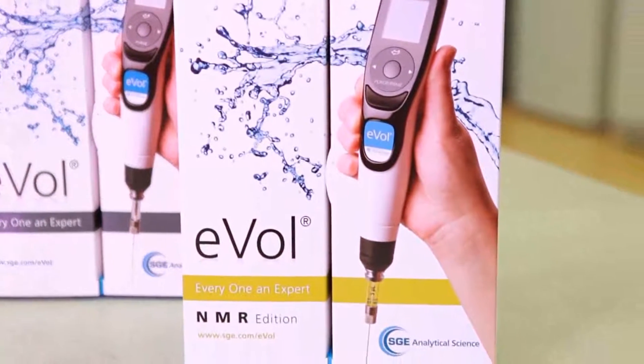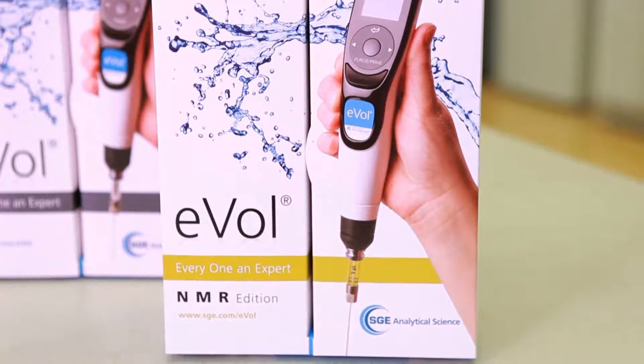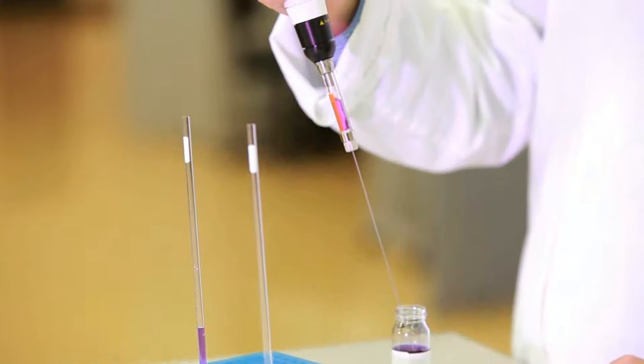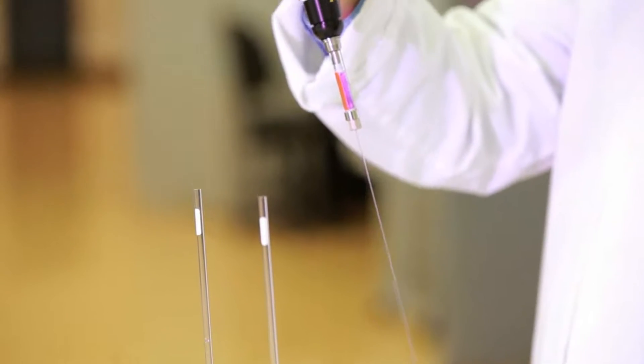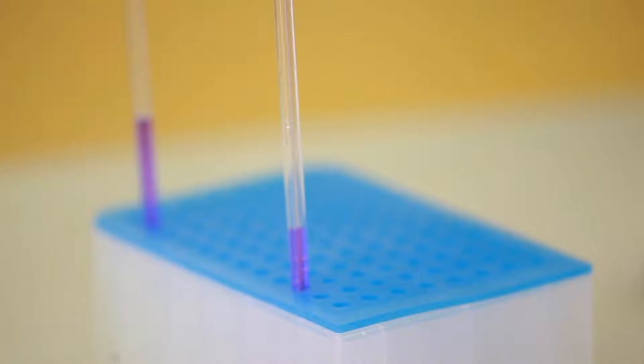Use the EVOL NMR Edition to further extend EVOL's capabilities. The NMR Edition kit features long stainless steel needles that enable in-tube sample dilution and mixing, and recovery of samples, facilitating reuse of NMR tubes.